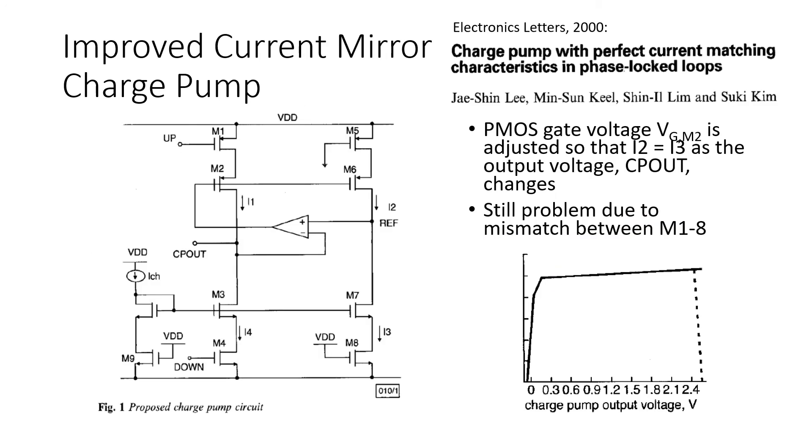So here's an improved charge pump circuit based on current mirrors originally presented in this 2000 Electronics Letters article. And it essentially makes use of a replica biasing technique. So to see how this works, recognize that this node here is the output of the charge pump. And you've got a feedback loop here formed by the amplifier and the transistor M6.